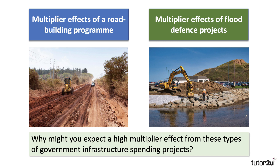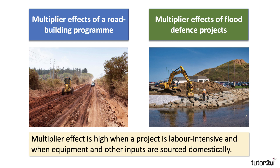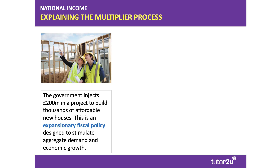Why might you expect a high multiplier from these government spending projects? It's worth thinking about the nature of the projects. Building homes, motorways, and flood defense schemes is often labor intensive and often involves local materials. The multiplier effect tends to be high when a project is labor intensive — creating lots of new jobs — and when equipment and inputs are sourced domestically rather than imported. When the rate of imports is high, the value of the multiplier tends to be lower. You want money to stay inside the regional or national circular flow.